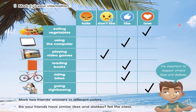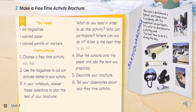Let's continue with activity number two: make a free time activity brochure. ¿Qué es lo que vamos a hacer acá? Vamos a hacer un folleto de una actividad que haces en tu tiempo libre. Tienes que tener: revistas antiguas, papeles de colores, lápices de colores, o marcadores.